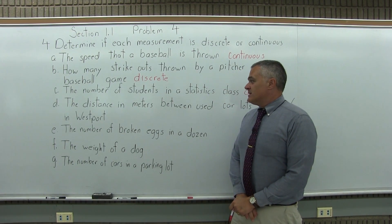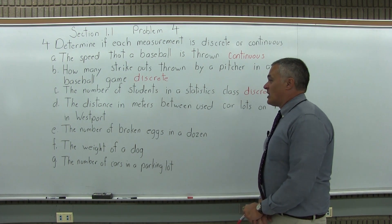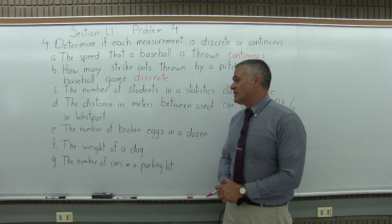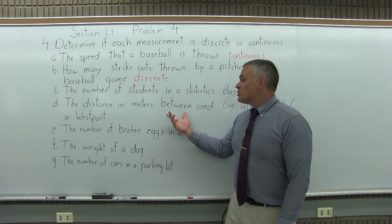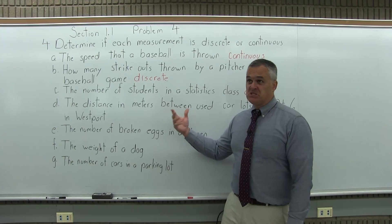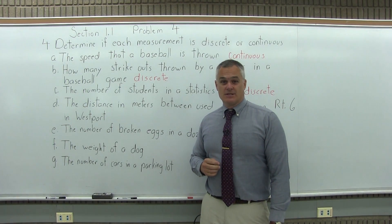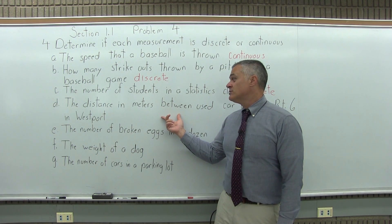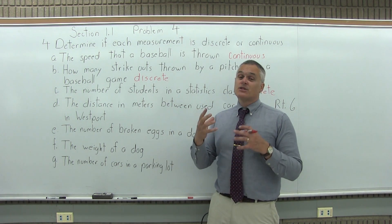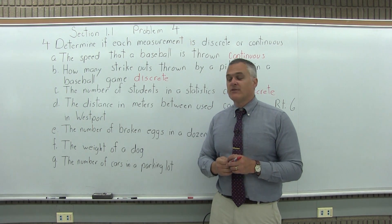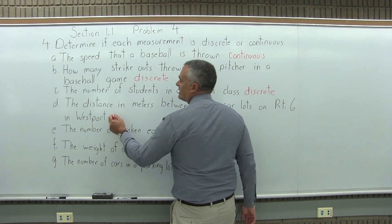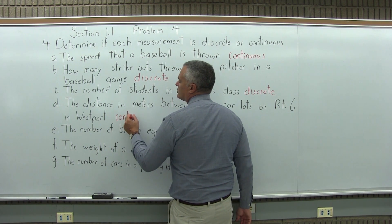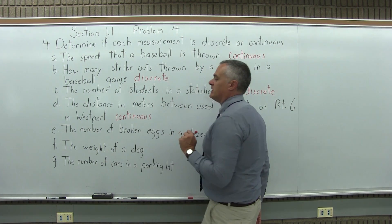Part D: the distance in meters between used car lots on Route 6 in Westport. There are a lot of used car lots right on Route 6. Could two car lots be 600 meters apart? Sure. 601 meters apart? Sure. Could they be 600.27 meters apart? Sure. Any distance that could be an answer, you could have an answer in between. So the distance between car lots on Route 6 in Westport would be continuous, because whatever answers you come up with, you can have an answer in between those.